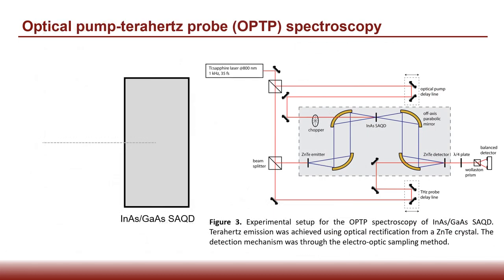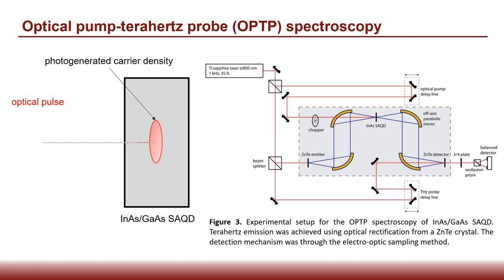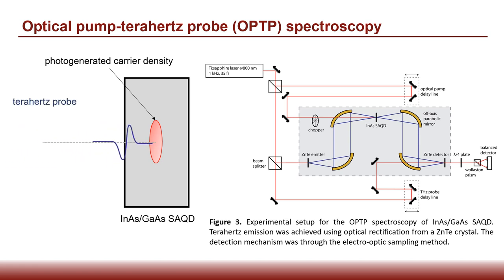The lifetimes of these processes may be investigated via OPTP spectroscopy, where an optical pulse will generate a carrier density in the sample. After a short time delay, a terahertz probe beam will be transmitted through the sample and its amplitude will be attenuated due to the sensitivity of terahertz radiation to free carriers.